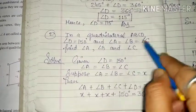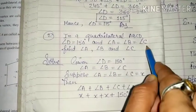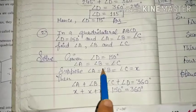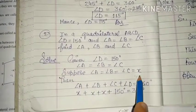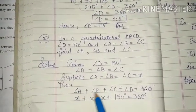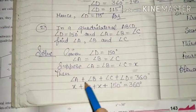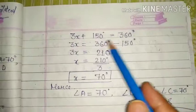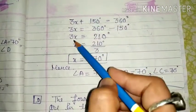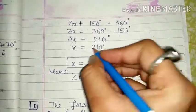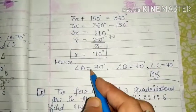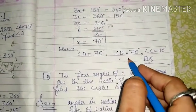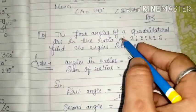Question number 2: in a quadrilateral ABCD, angle D is 150 degrees and angles A, B, C are equal. Let angle A equal angle B equal angle C equal X. Using the angle sum: X plus X plus X plus 150 equals 360. So 3X equals 210, giving X equals 70 degrees. Therefore angles A, B, and C are each 70 degrees.